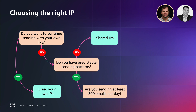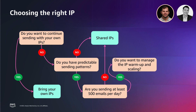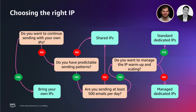The third question is: are you sending more than 500 emails per day? In that case, we recommend using dedicated IPs, as bounce or complaint events at low sending volumes have a higher impact on your IP reputation. If you are sending less than 500 emails per day, we recommend shared IPs. The fourth question is whether you want to manage your IP warmup and scaling. If you are sending more than 500 emails per day and have predictable sending patterns, you can use either standard or managed dedicated IPs.